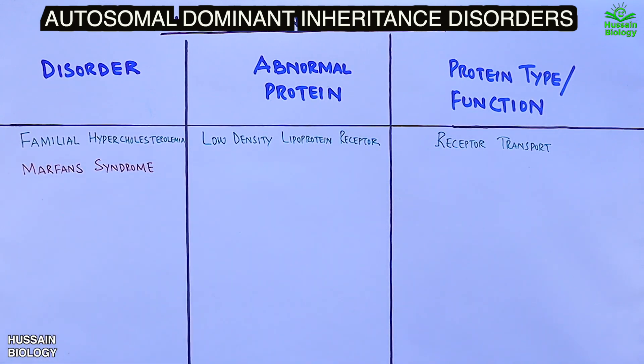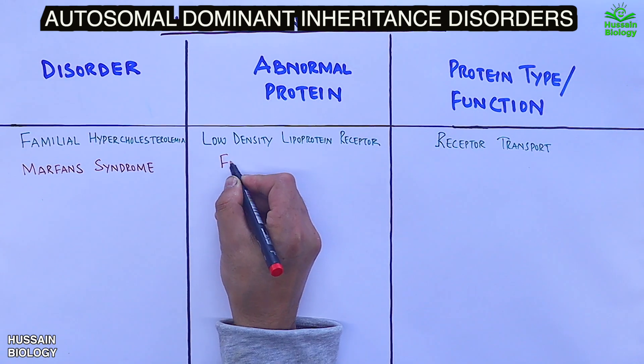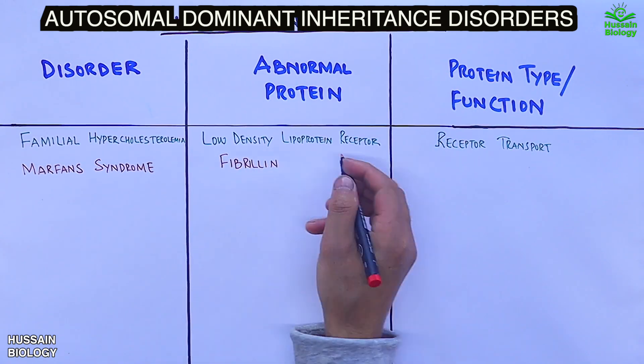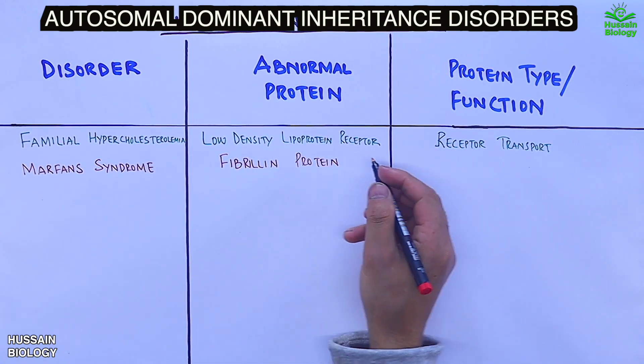Second is Marfan syndrome, which affects the connective tissue and skeletal system. The abnormal protein in this disorder is fibrillin, whose normal function is structural support.